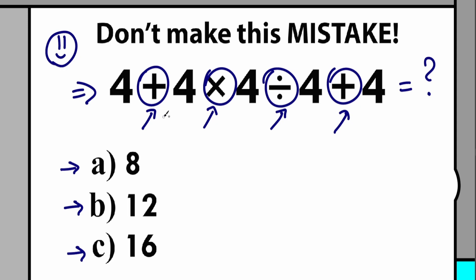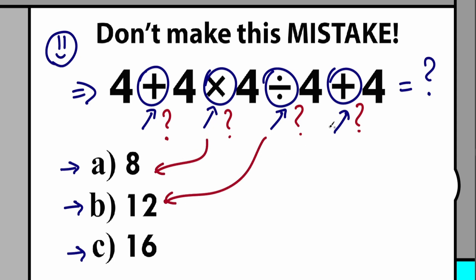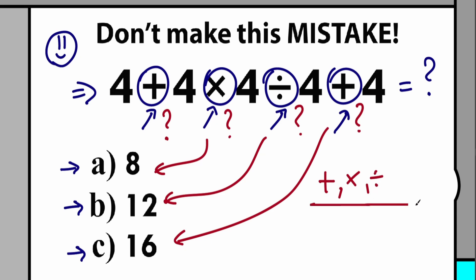A lot of students are confused about the first step — whether we start with addition, multiplication, or division. Whatever order of operation we select is going to create a different answer. For example, if we start with multiplication we might get 8; if we start with division, maybe 12. This is why we need to know the correct order to perform these mathematical operations.